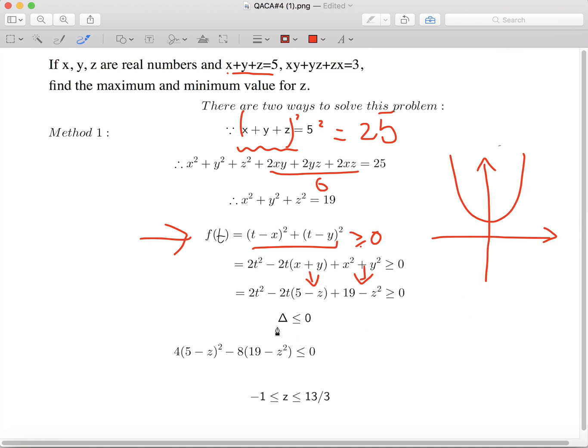The discriminant is b squared minus 4ac, which is 4 times 5 minus z squared minus 8 times 19 minus z squared is smaller or equal to 0.